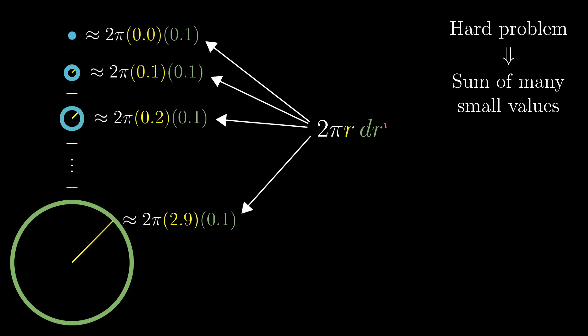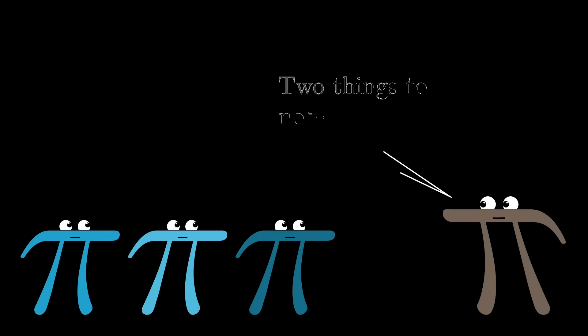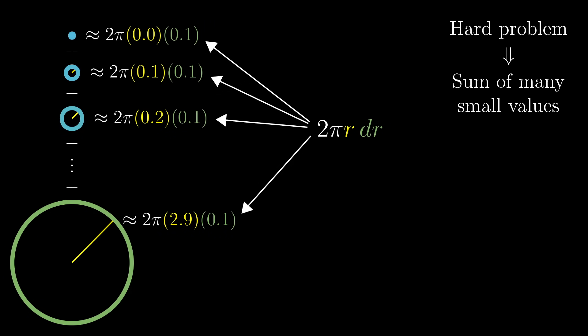Remember, the small number dr here represents our choice for the thickness of each ring, for example 0.1. And there are two important things to note here. First of all, not only is dr a factor in the quantities we're adding up, 2 pi r times dr, it also gives the spacing between the different values of r.